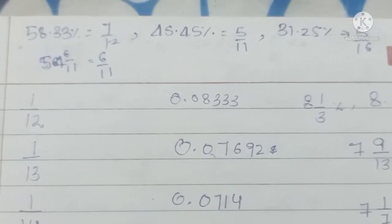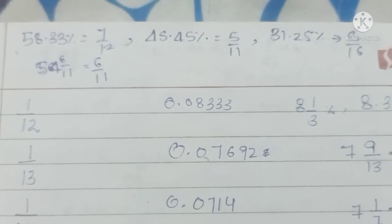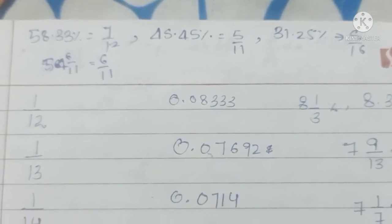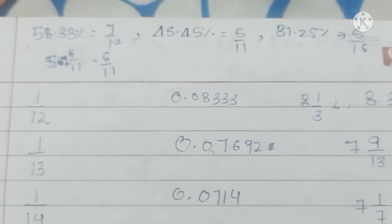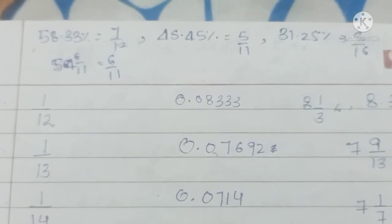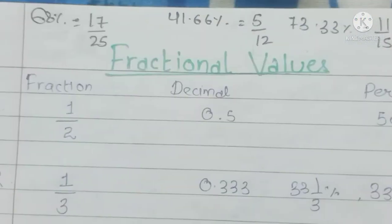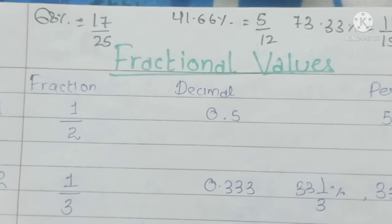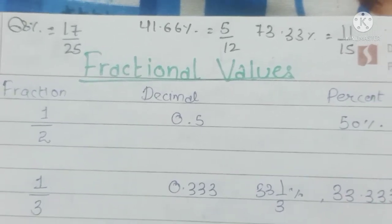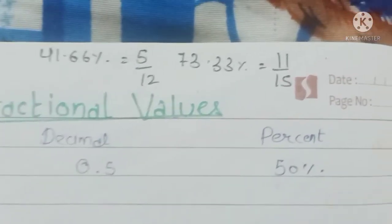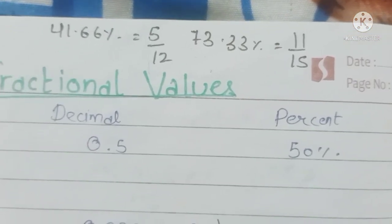58.33% is 7/12. 45.45% is 5/11. 31.25% is 5/16. 54.6% is 6/11. 68% is 17/25. 41.66% is 5/12. 73.33% is 11/15.